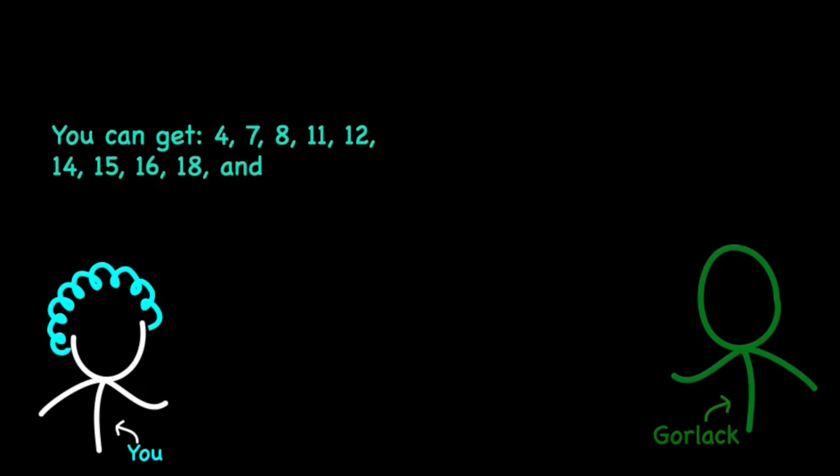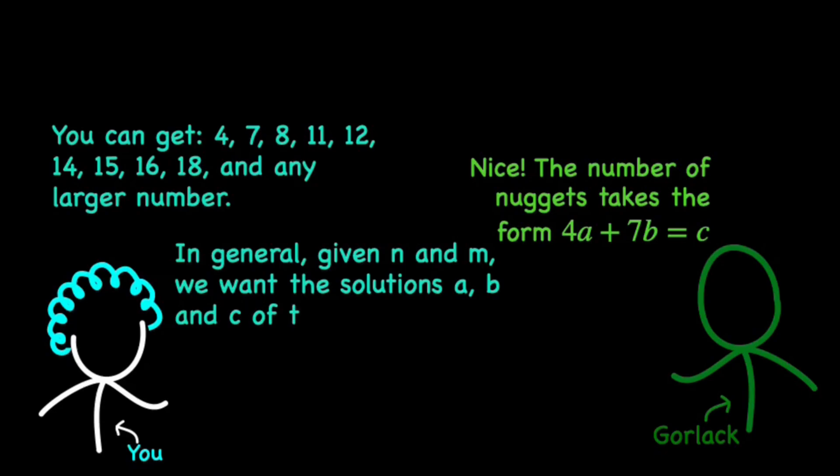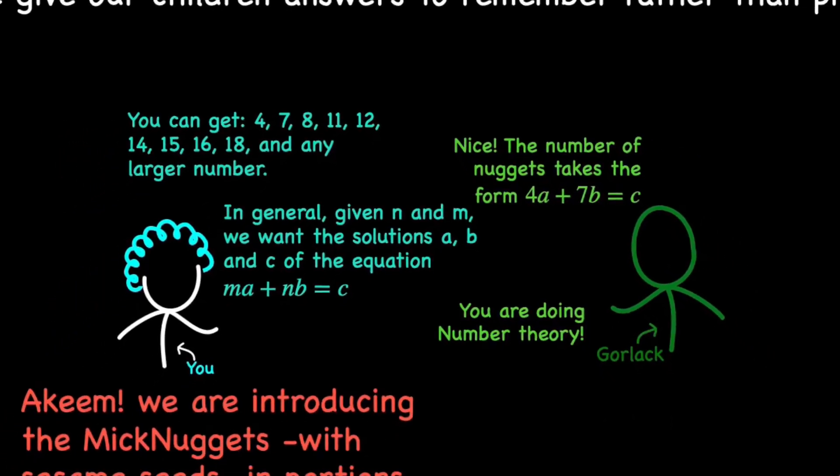You'll want to abstract and generalize the problem. And before you know it, you'd be doing some number theory. You might realize that the total number of nuggets you can buy must take the form 4a plus 7b, where a and b are natural numbers representing how many portions of 4 or 7 you've chosen. But the mathematician in you won't settle for studying just this case. You'll want to go further. Given two numbers m and n, how can you find all possible solutions of the equation c equals ma plus nb, where a, b, and c are natural numbers?